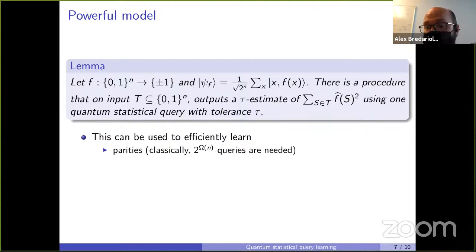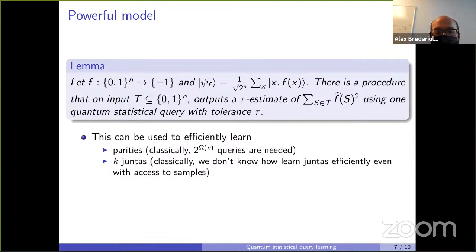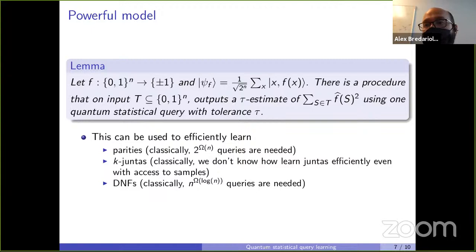We can also learn k-juntas — functions that depend on only k out of n input variables. We reduce this to Fourier sampling and apply our QSQ algorithm. Classically, we don't even know how to learn juntas with full sample access. We also show QSQ learners for DNFs, again compared to the exponential lower bound that holds classically.